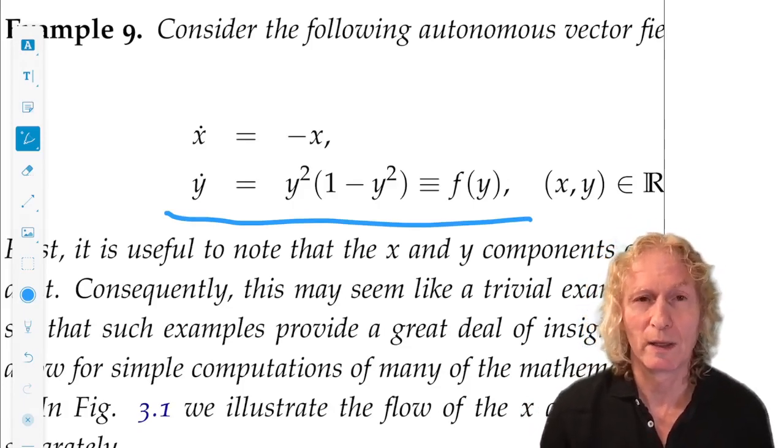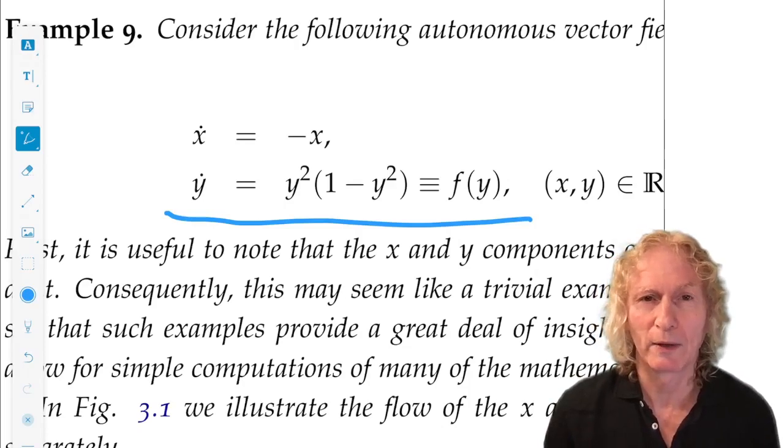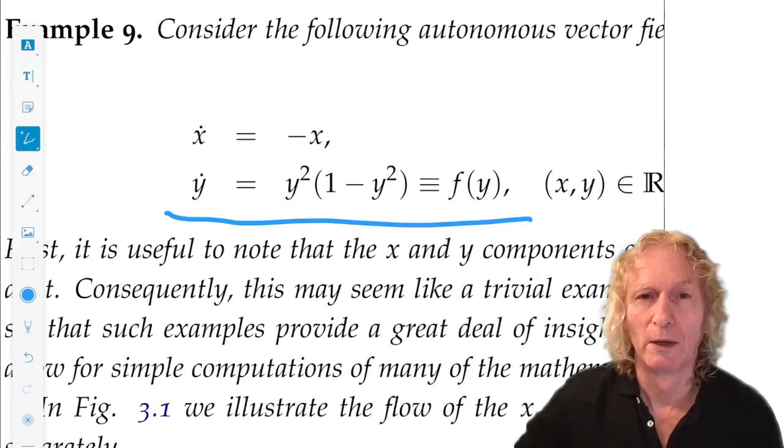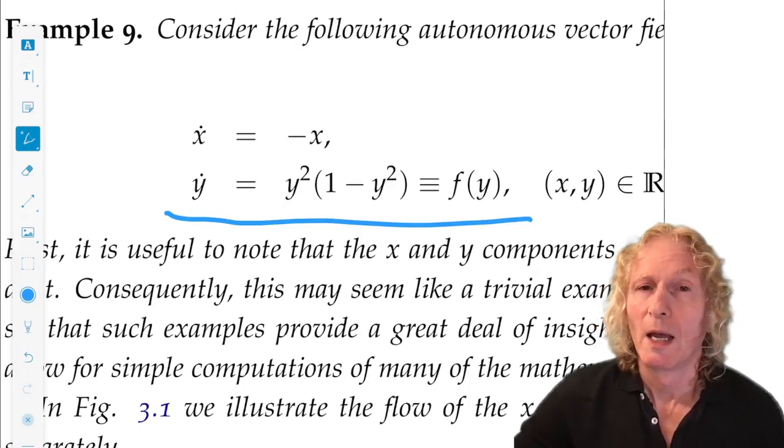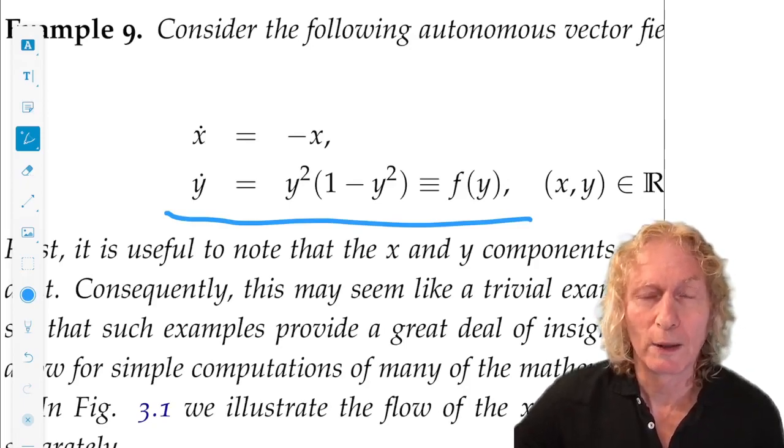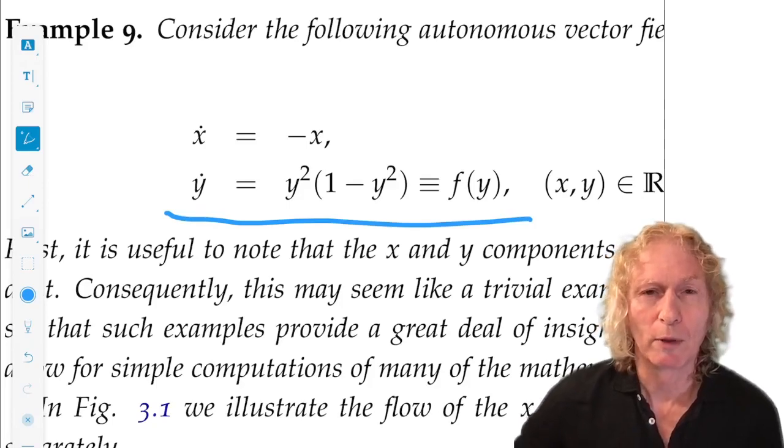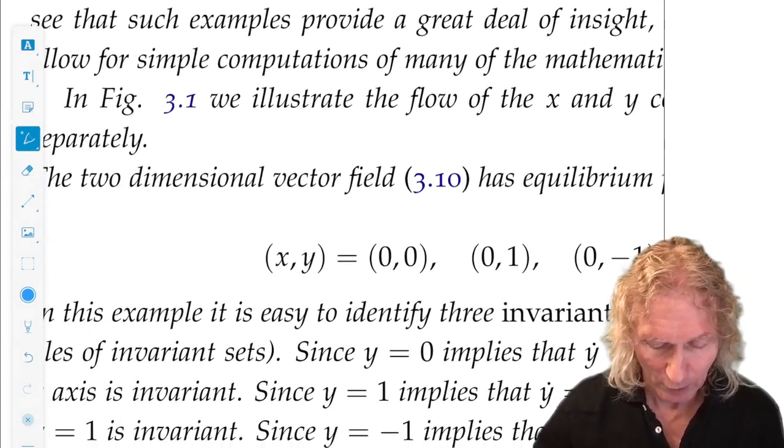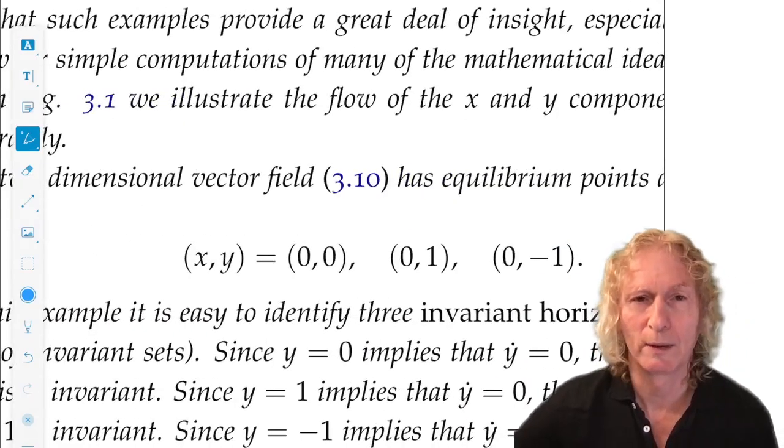So x has to be zero, so you have to be on the y-axis, and y dot, for it to be zero, you have y equals zero and y equals plus or minus one. So I write them down here.